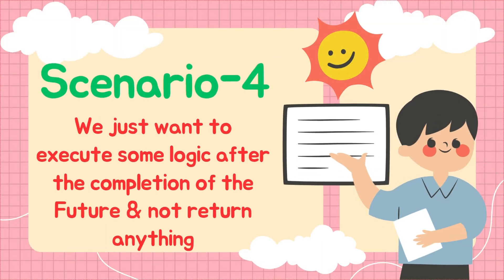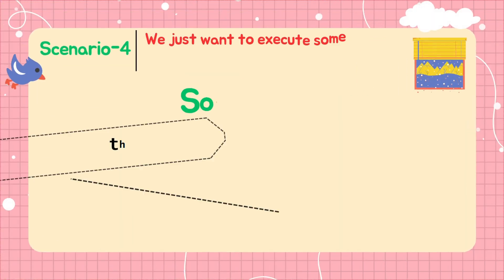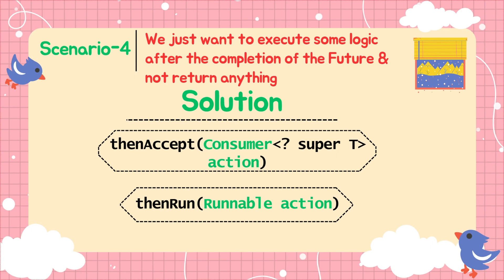We have seen that thenApply() is used when we need to return something from the callback. Now, if we do not want to return anything and just want to execute some logic after the previous future completes, we can use thenAccept() or thenRun(). thenAccept() takes a Consumer as an argument — a functional interface that takes an argument but does not return anything. thenRun() accepts a Runnable, which also does not return anything.